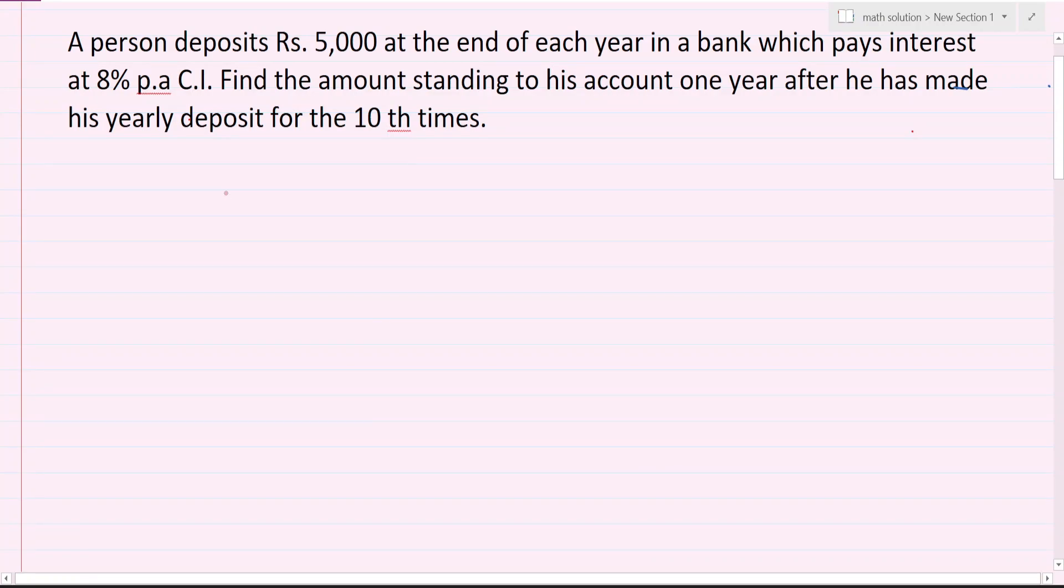Here is an annuity question. A person deposits Rs. 5000 at the end of each year in a bank which pays interest at 8% per annum compound interest. Find the amount standing to his account one year after he has made his yearly deposit for the 10th times. This is the question that we do.